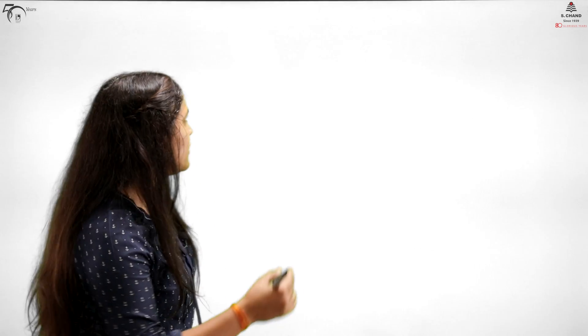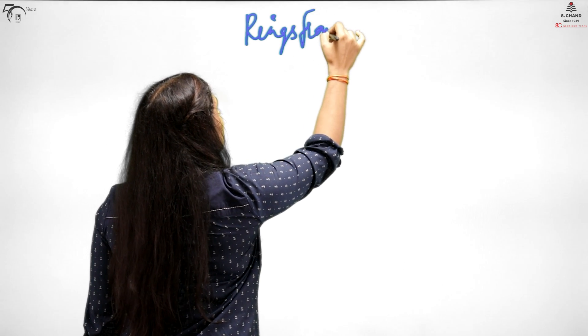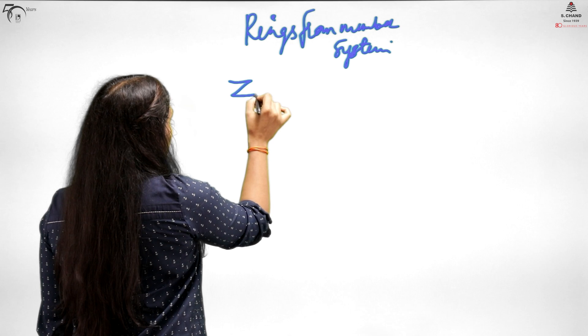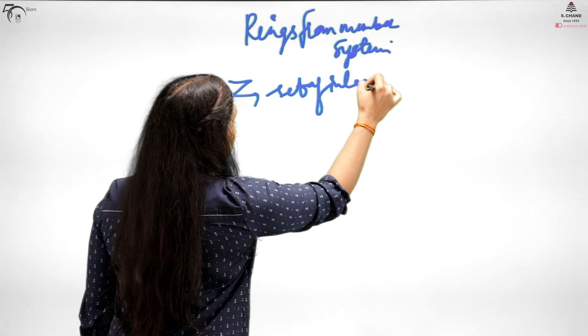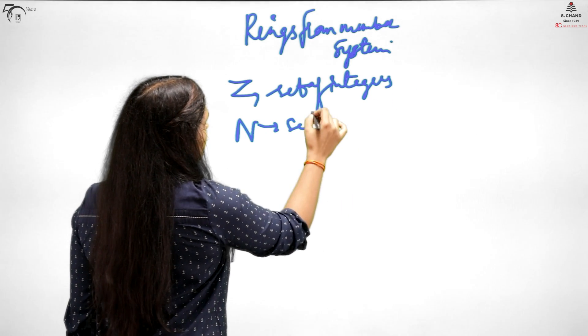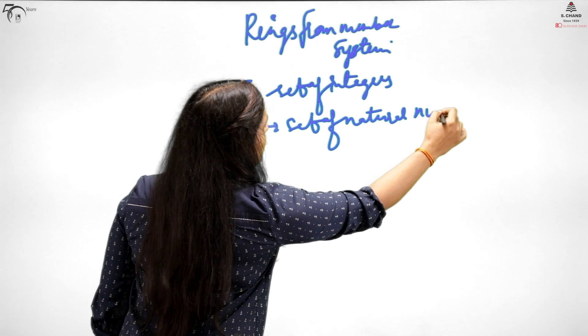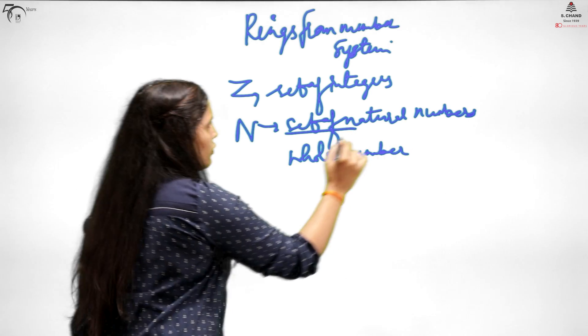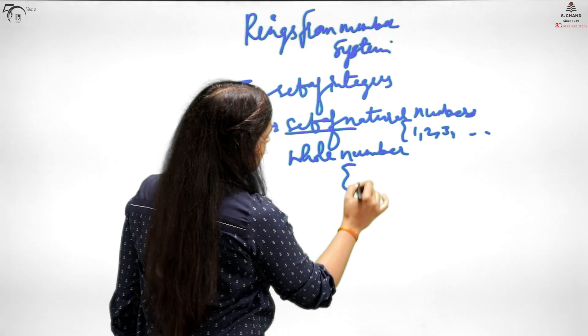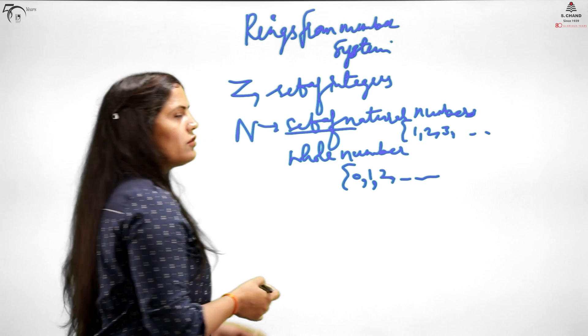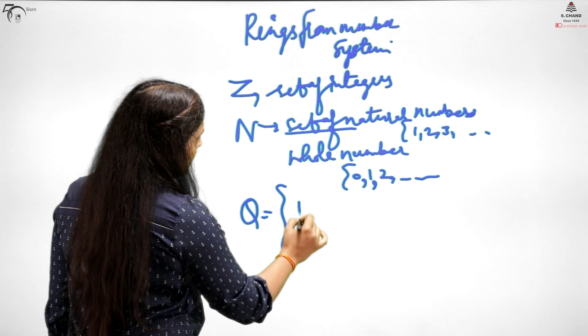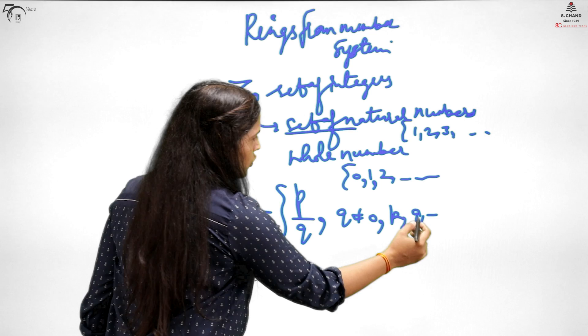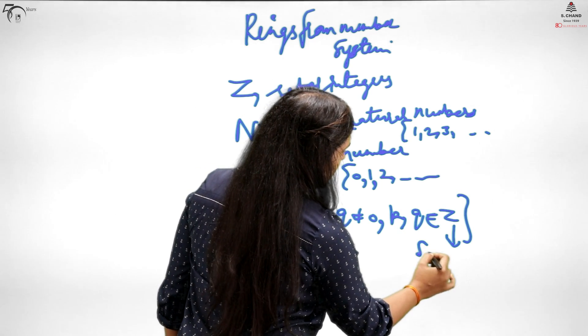Let's start with rings from number system. First, we need to start with the number system. The set of natural numbers, integers, whole numbers which is just addition of 0, and rational numbers in the form P by Q where Q is non-zero and P and Q are integers.